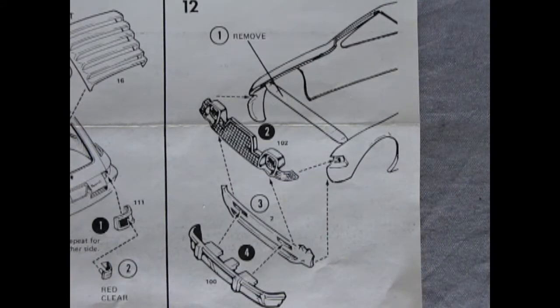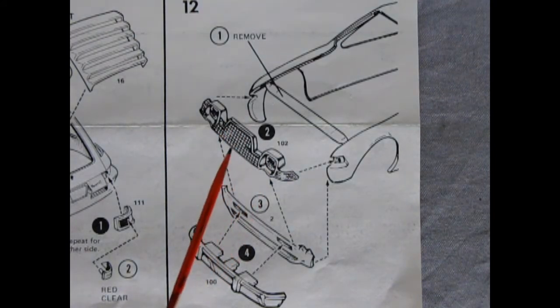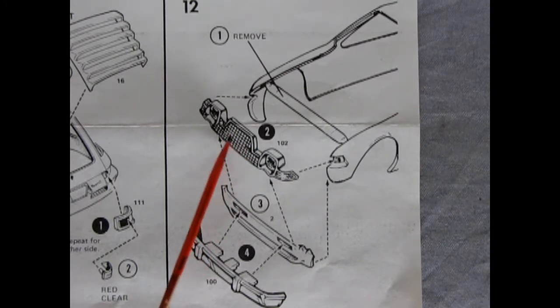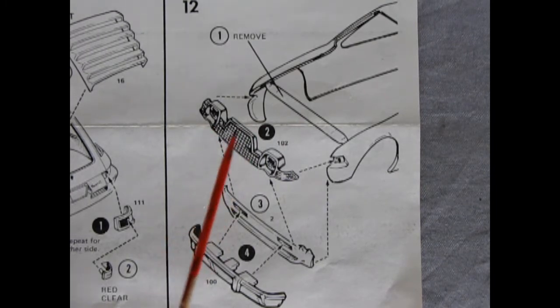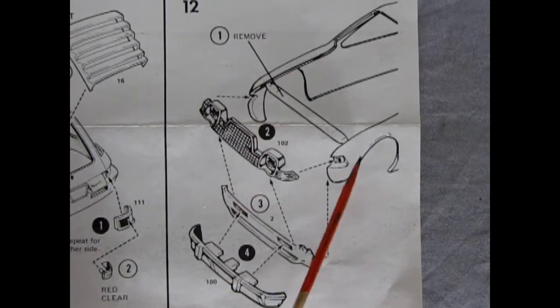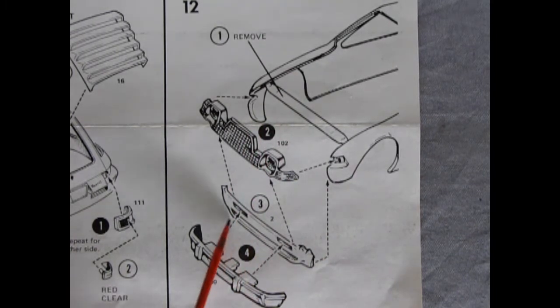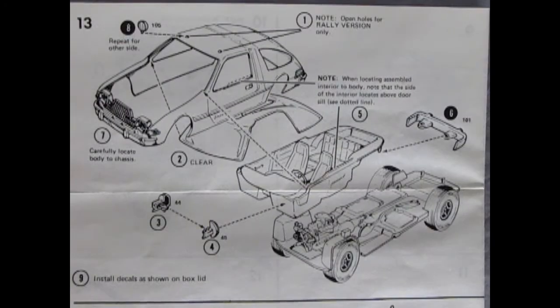Now one thing that makes the 78 pacer different from the earlier ones is in 78 they put in the V8 motor. This one of course has the 6 but in order to accommodate the V8 they had to add in this little radiator thing and a bulge in the hood. So there's that grill. Now you're going to have to remove this bar that puts the front fenders together and then there's the underpan and the front bumper.